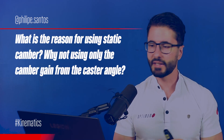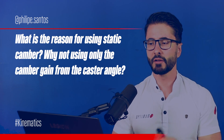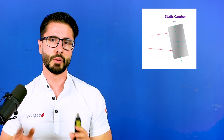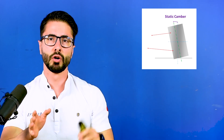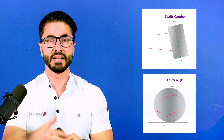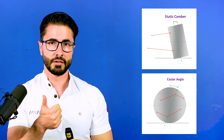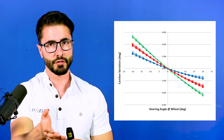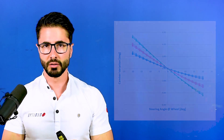What is the reason for using static camber, and why not using only the camber gain from the caster angle? There are a few different reasons why we would still use camber angle even though, due to caster, we can gain camber as we steer. The first reason is that we only have the caster effect on camber gain on the front axle, since we have steering, and not on the rear axle. The second reason is that the camber gain coming from the caster is only influential when you have a lot of steering angle — this means that for low-speed corners we do gain a lot of camber because of the caster, but for high-speed corners we have minimal steering, meaning that we don't recover as much camber on the outside tire as we need.